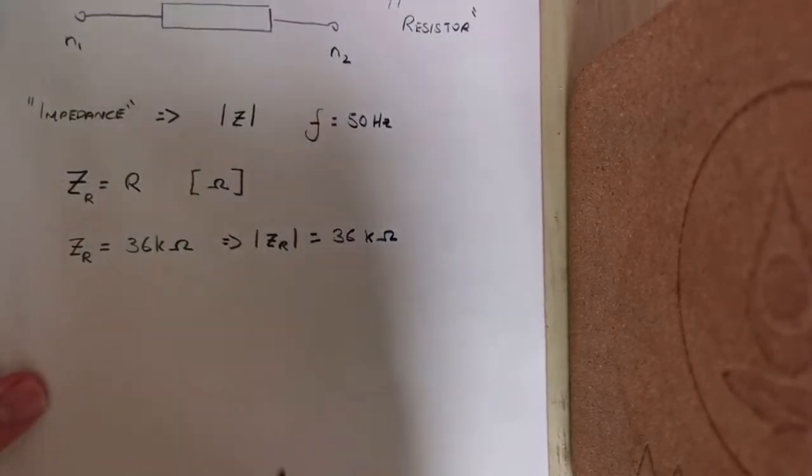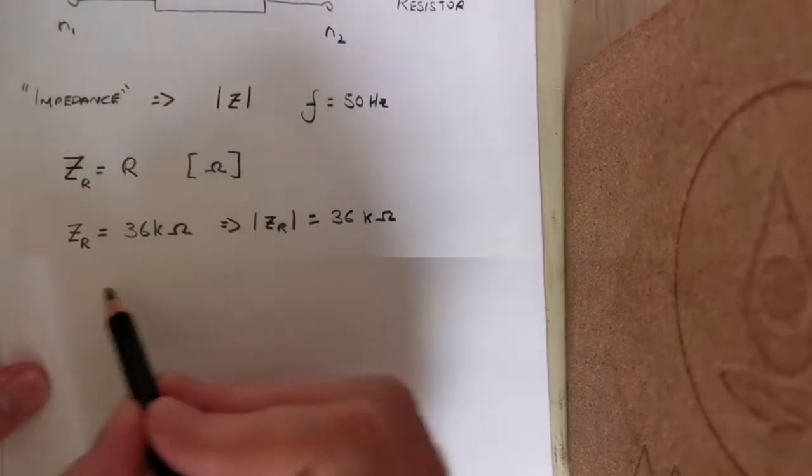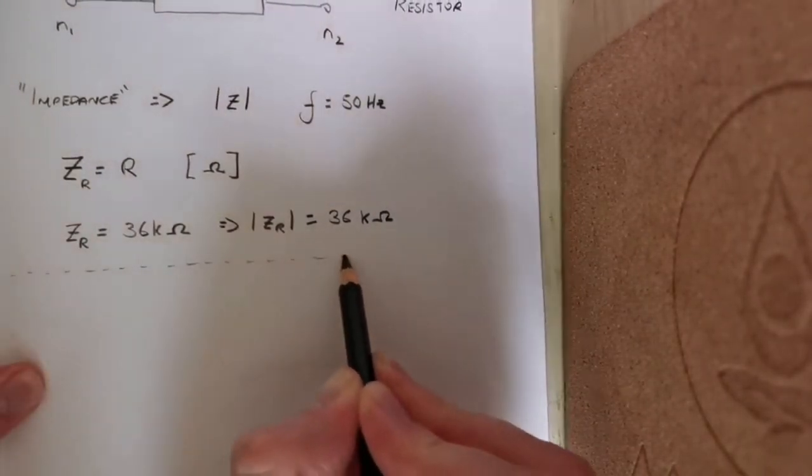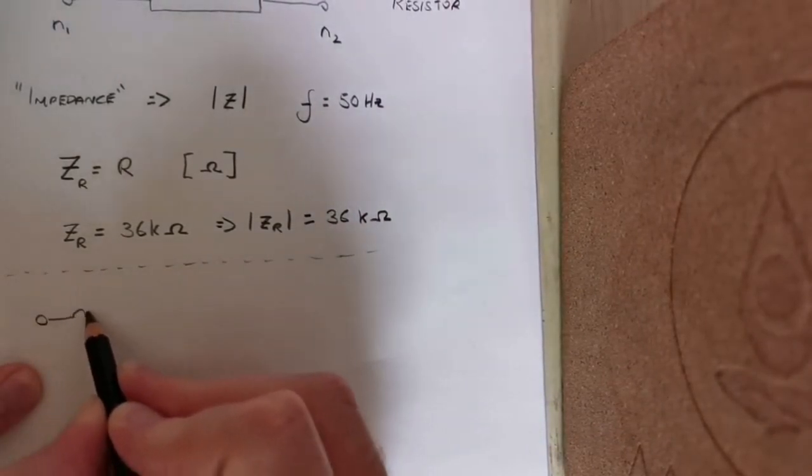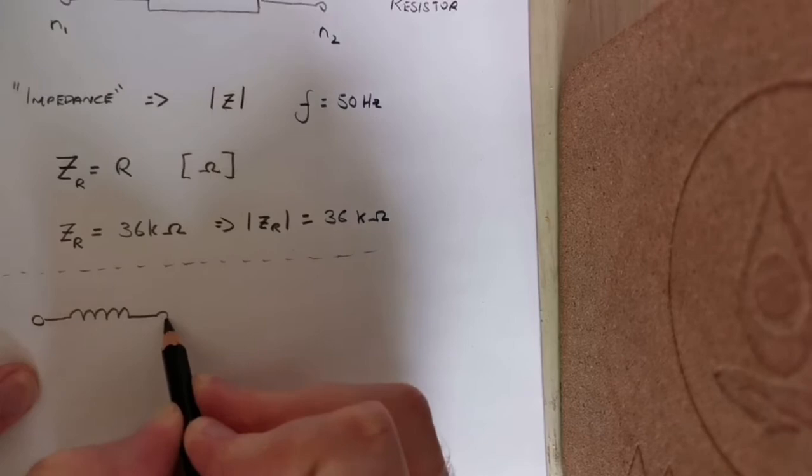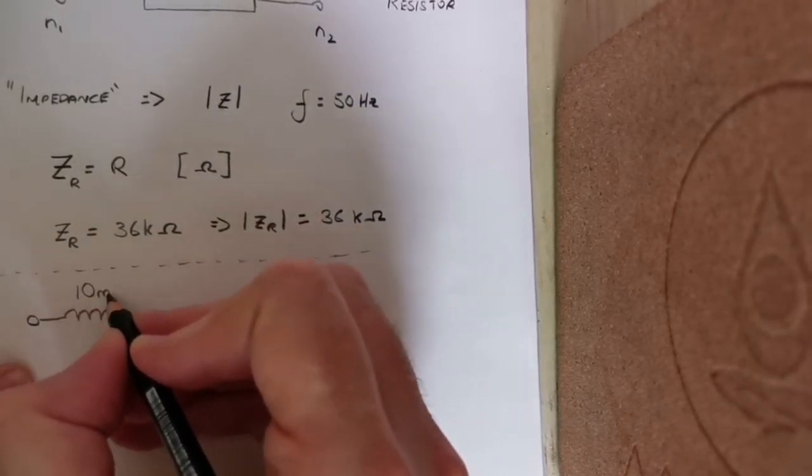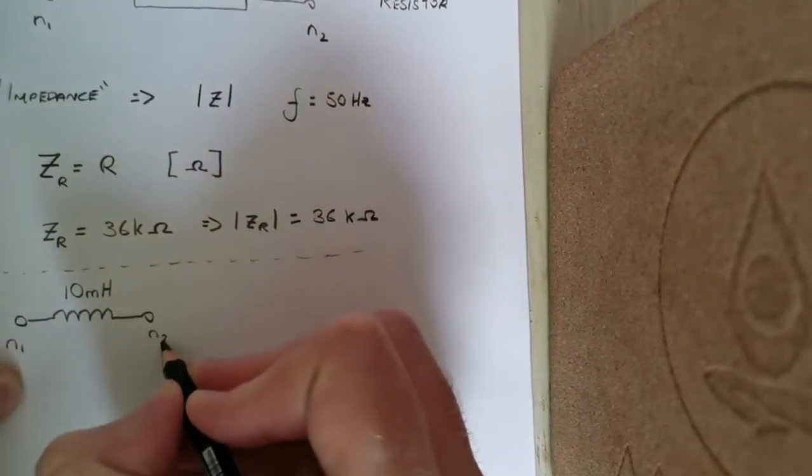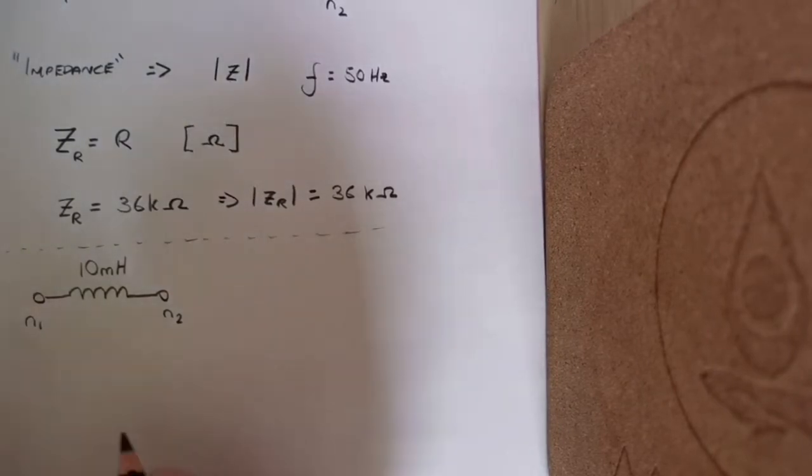Now in questions with inductors and capacitors it's slightly different. If we have an inductor, let's say we're told it has an inductance of 10 millihenries and we want to know the impedance between node 1 and node 2.